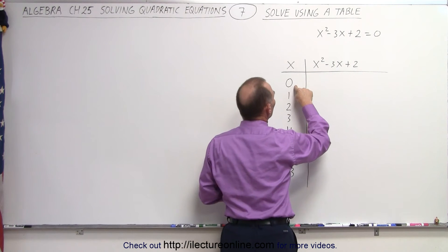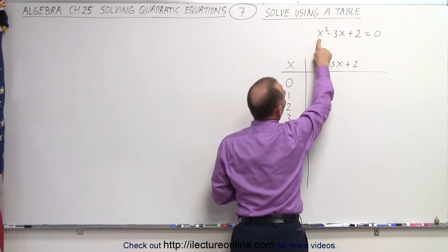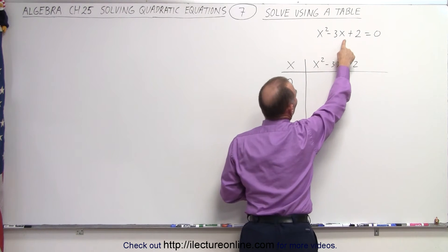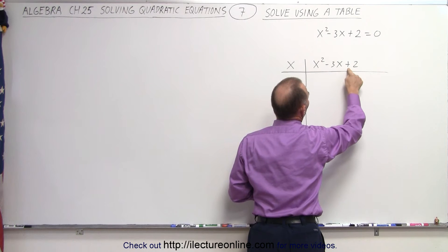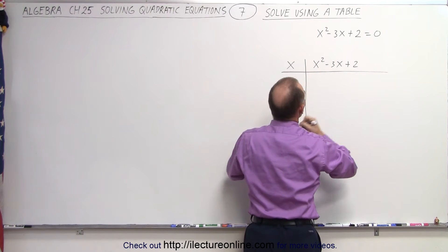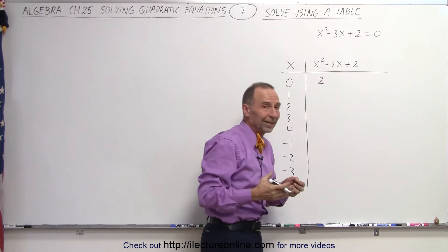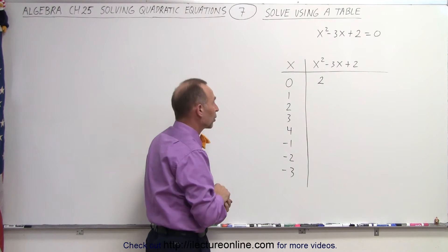First, the easy one is x = 0. That makes x² - 3x + 2 simply equal to 2 when x = 0. Since it's not equal to 0, that's not a solution to the quadratic equation.